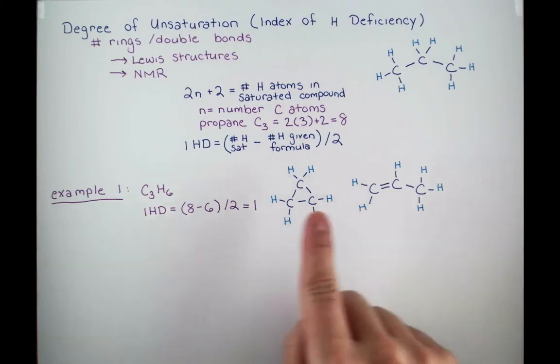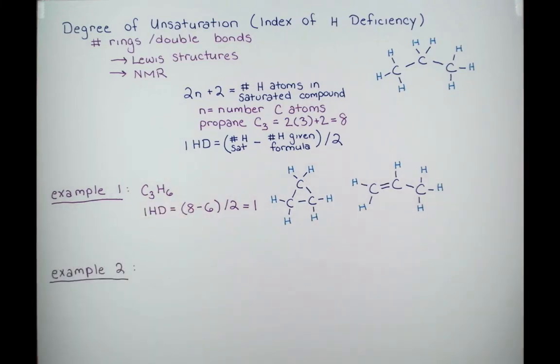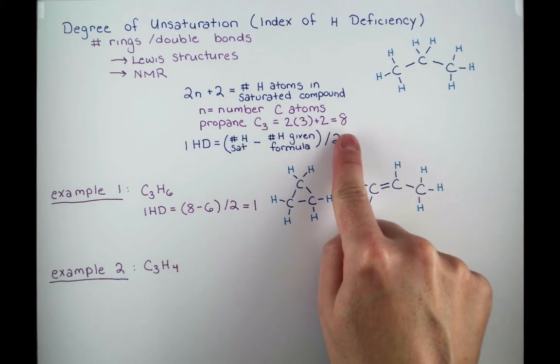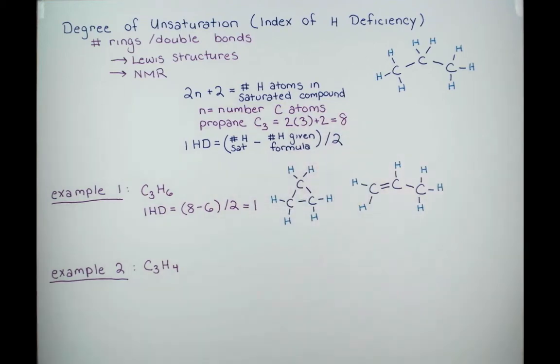In our next example, let's explore unsaturation in the formula C3H4. We're still using C3 here, so we know that our saturated structure should have 8 hydrogen atoms. Here's our equation to compare our saturated structure with the formula we're given, and this equation gives us a degree of unsaturation of 2.